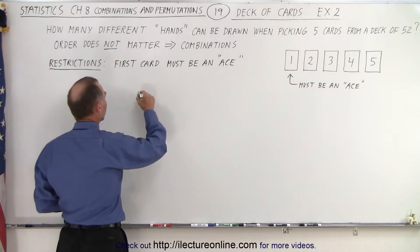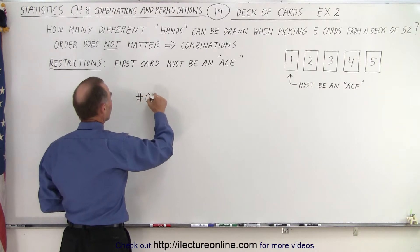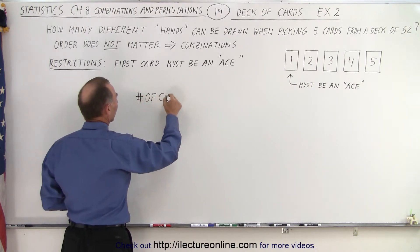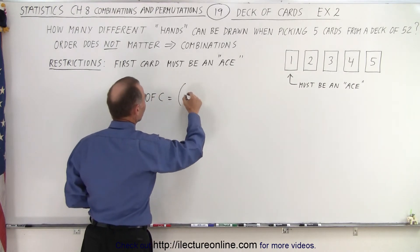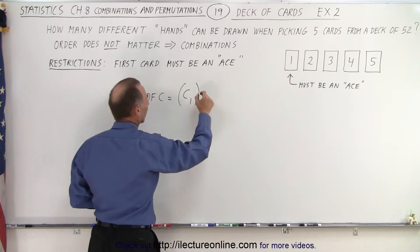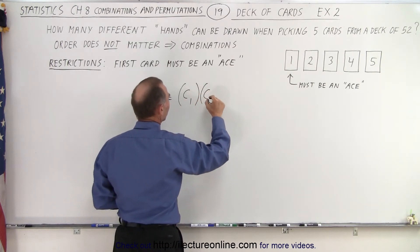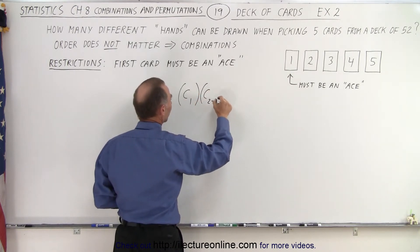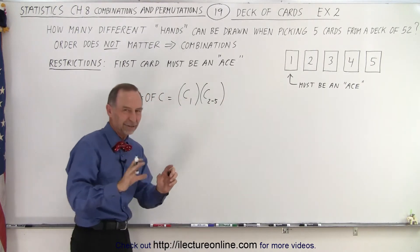In this case, we're looking for the number of combinations, and that's going to be the number of combinations for the first card and the number of combinations for cards two through five — the next four cards.